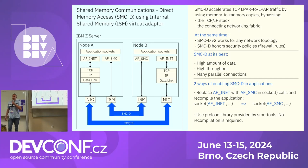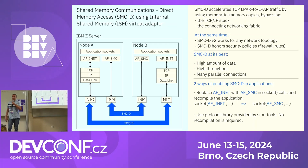You don't need to change IP addresses, host names, or network topology. All security features are preserved — data traveling across memory between operating systems is protected with authentication, encryption, and IP filters. However, SMC cannot completely replace traditional connectivity for two major reasons.